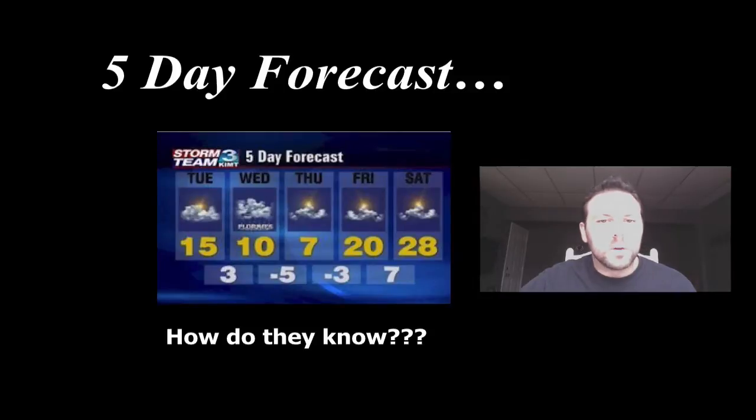The last few screencasts looked at a bunch of different weather variables. Now we can take all those variables and put them together to try to predict the weather. Occasionally on the news we'll see 5-day forecast, 1-week forecast, or even up to 10-day forecast. What we need to know is how do they do this? How are they able to predict out 3, 4, or 10 days in advance?